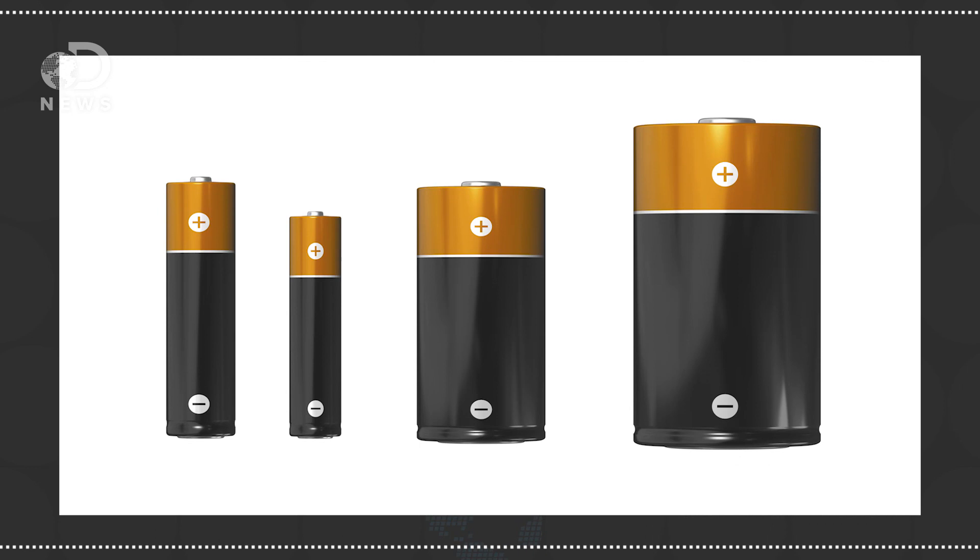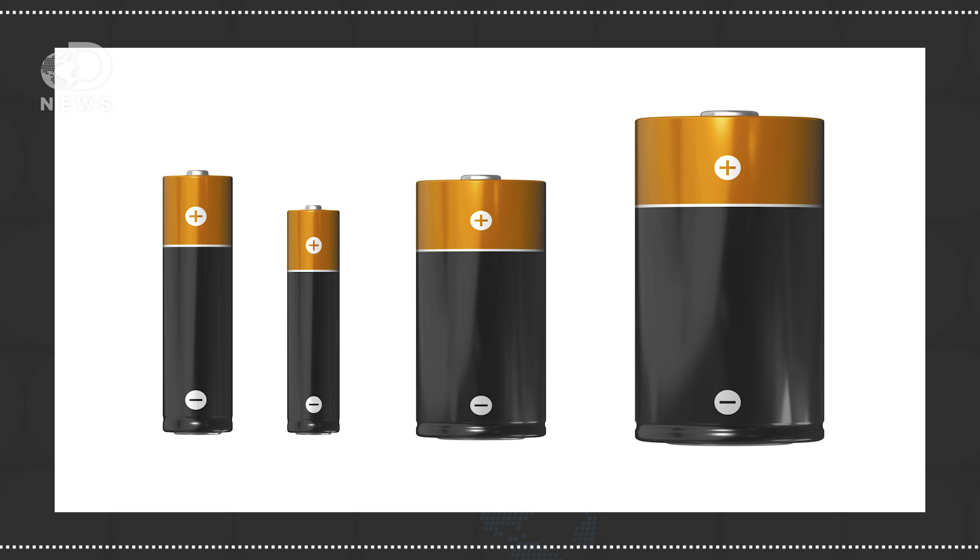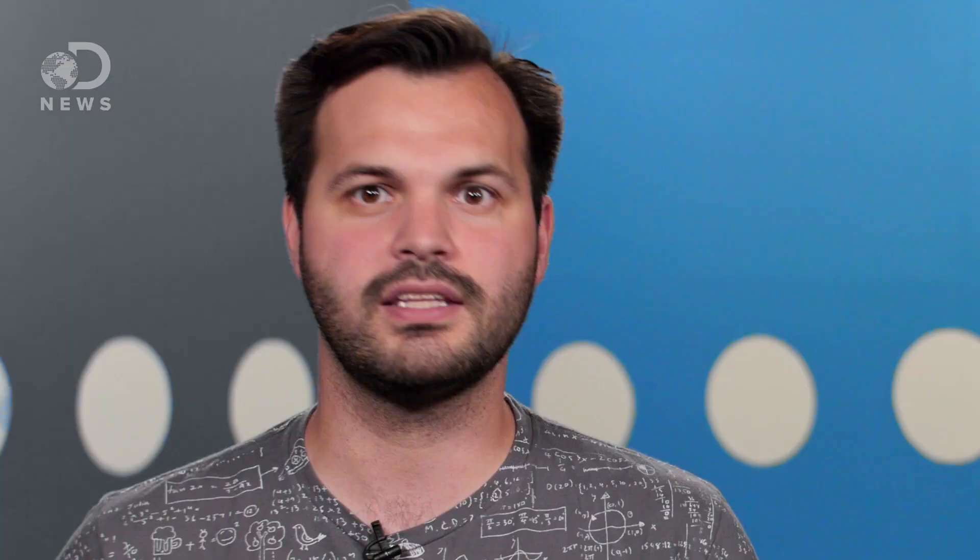Batteries that you see a lot, AA, AAA, C, and D cells are all alkaline batteries, which means the cathode is made of manganese dioxide, the anode is a zinc powder, and the electrolyte is a potassium hydroxide, which is the alkali part.